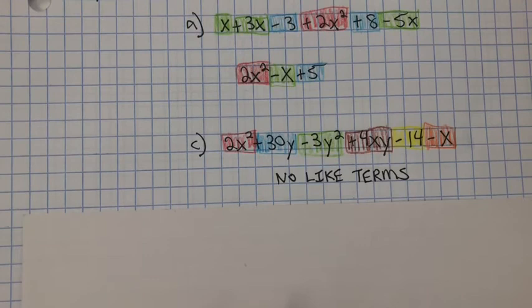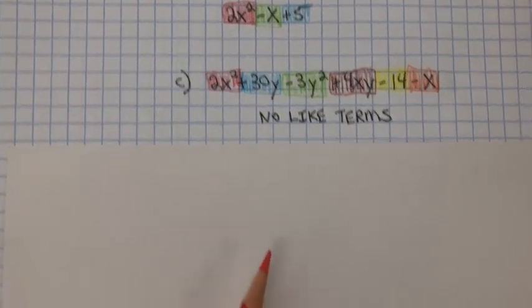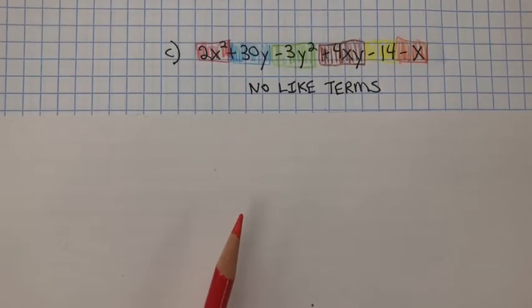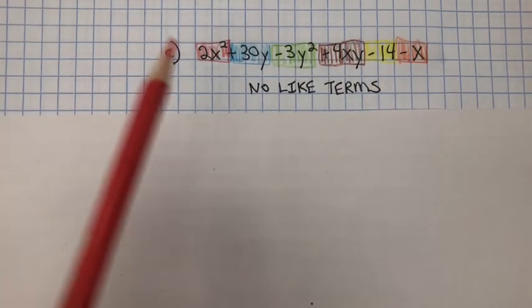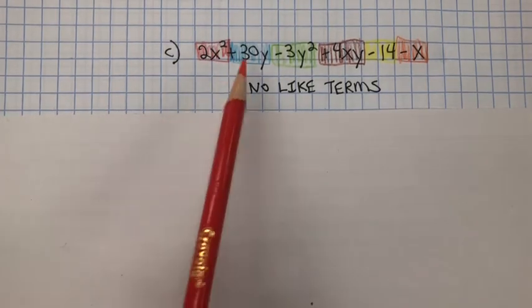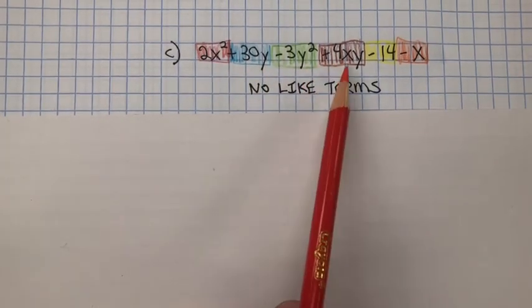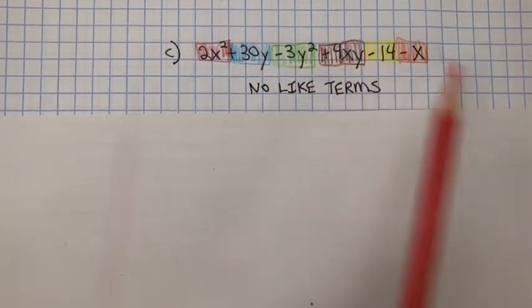In C, there are no like terms — there are no terms that I can combine.